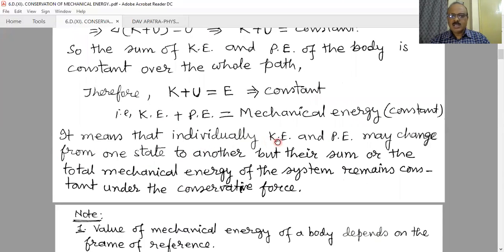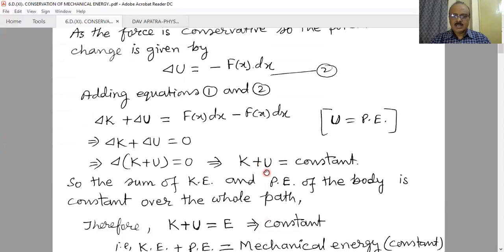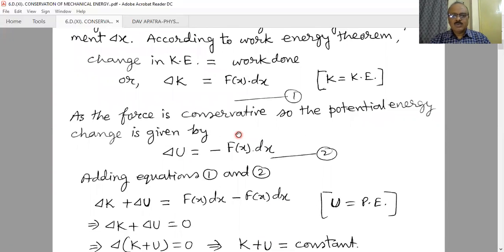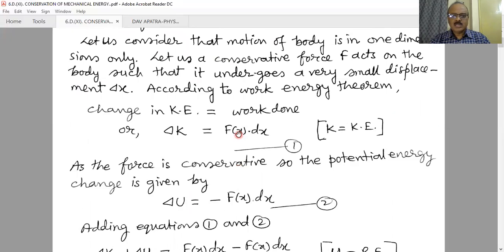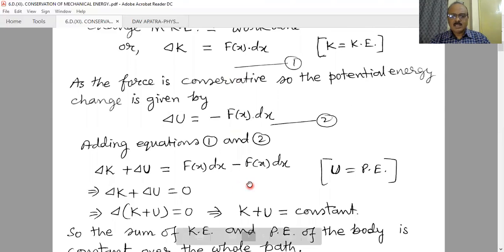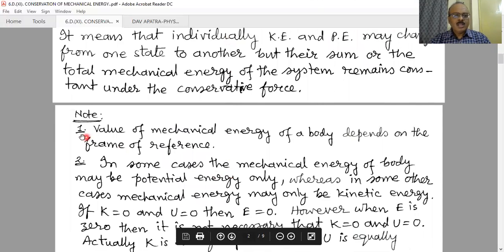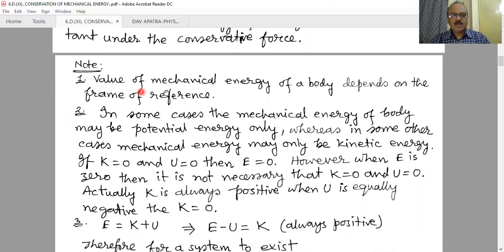It means that individually kinetic energy and potential energy may change from one state to another, but the total mechanical energy of the system remains constant under the conservative force. When a conservative force is in action, there is a mutual interchange of kinetic energy and potential energy, while the total mechanical energy — the sum of kinetic energy plus potential energy — remains constant.